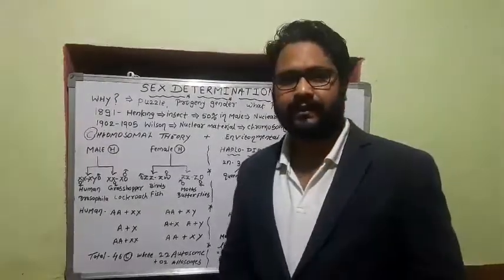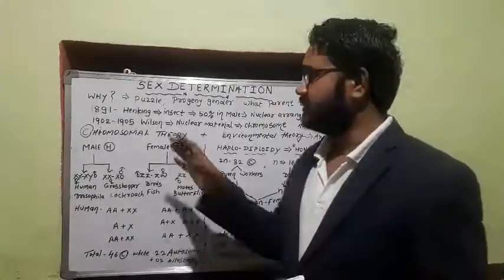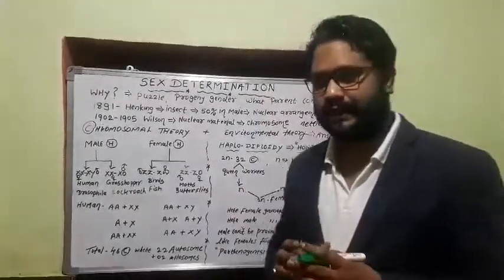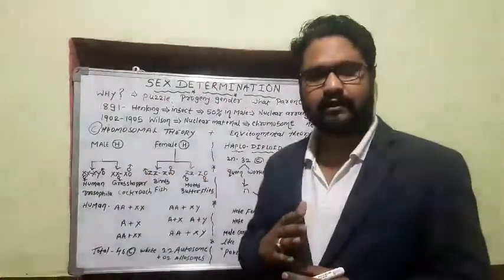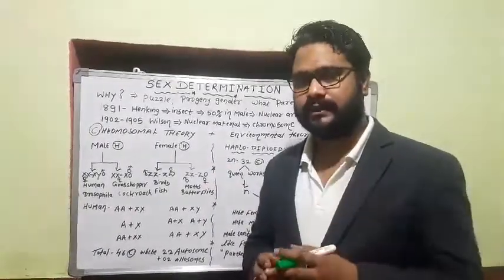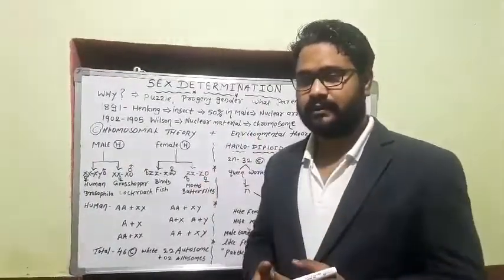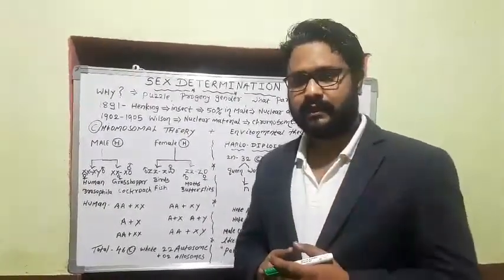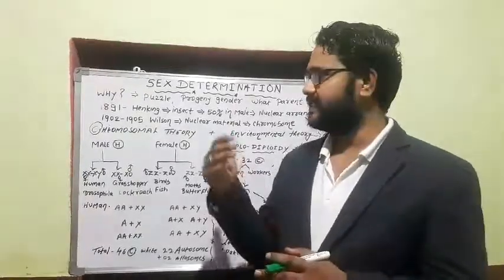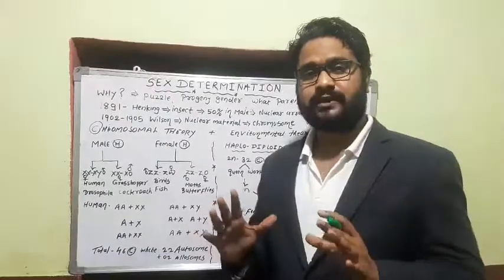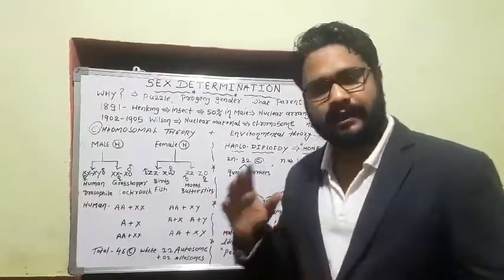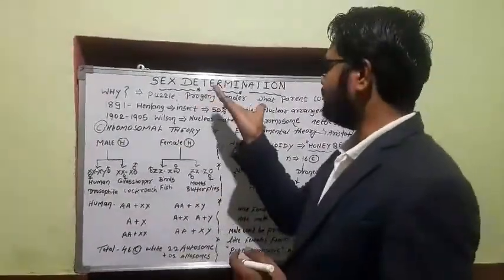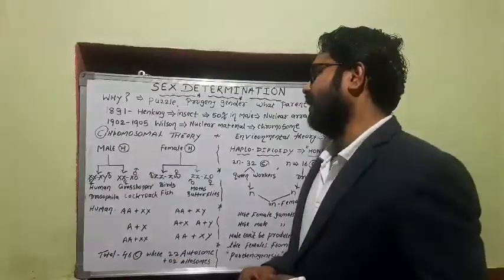Let's start today with one of the most interesting topics — sex determination in living organisms. Today we will focus on certain insects and human beings, and how sex determination occurs. We'll understand the beginning, who started this research, and at the end we'll see sex determination in a very socialized insect society, that is honeybees — the haplodiploidy type of sex determination.